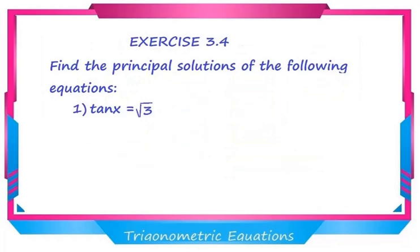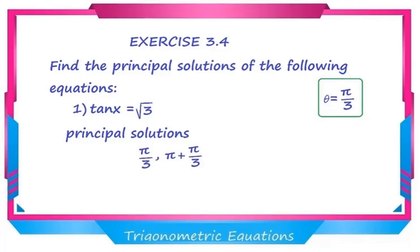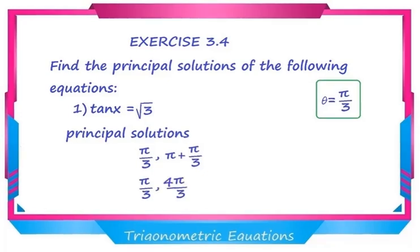Now the first question: find the principal solution of tan x = √3. Since √3 is positive, tan(π/3) = √3, so θ = π/3. Tan is positive in the first and third quadrants, giving θ = π/3 and π + θ = π + π/3 = 4π/3. Therefore the principal solutions are π/3 and 4π/3.